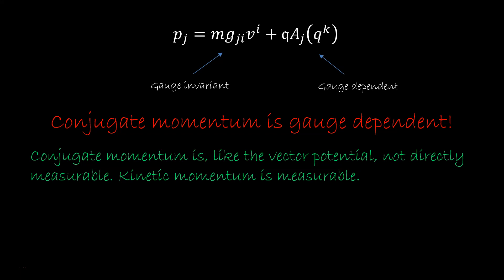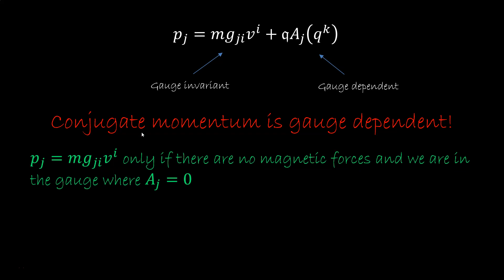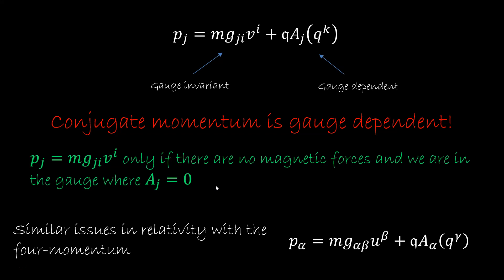Now if we fix a gauge, then we have a relationship between these quantities. In particular, p equals mgv only if there are no magnetic forces, and we chose the gauge where a is zero. Just so you know, you have similar issues in relativity between 4-momentum, 4-velocity, and 4-potential. This mathematical structure is present in classical mechanics, relativity, quantum mechanics, all of physics.